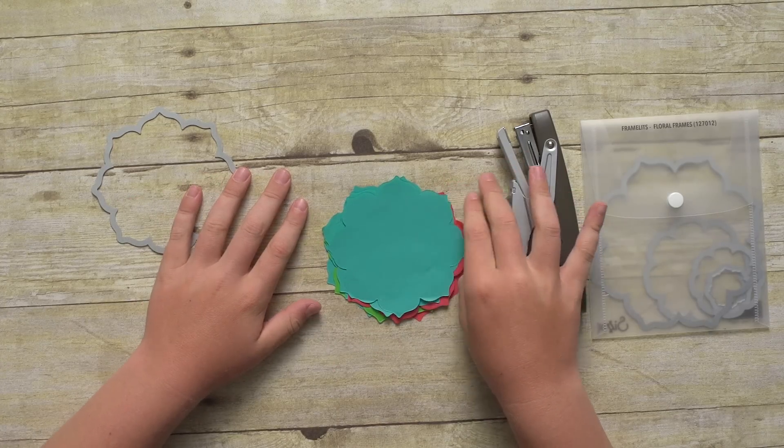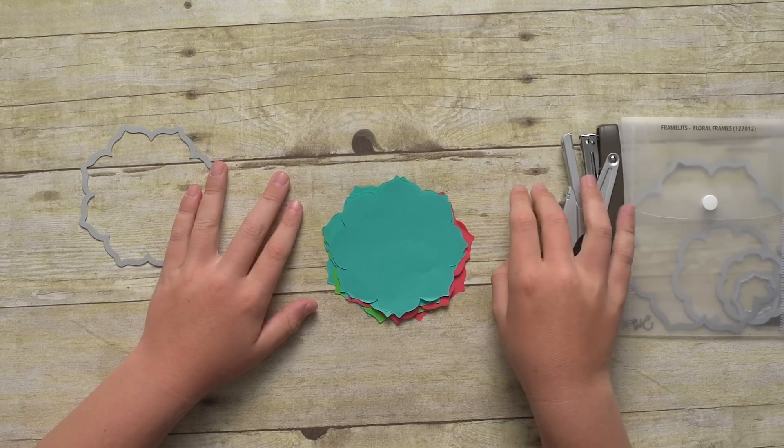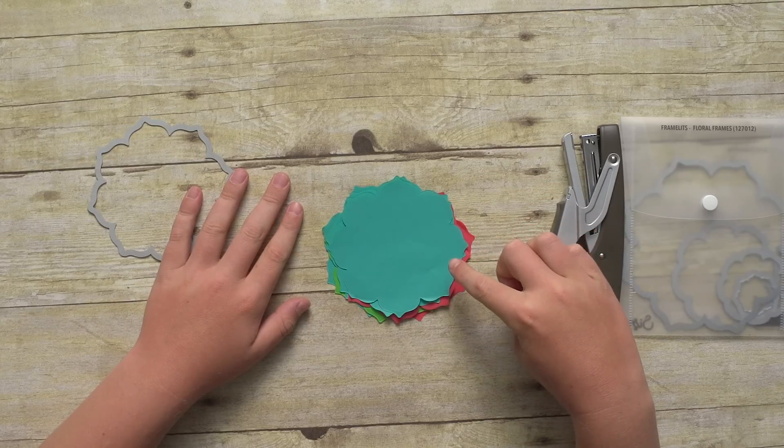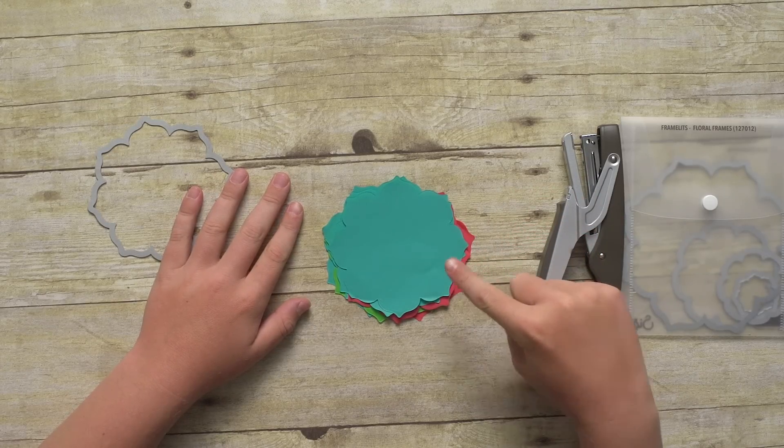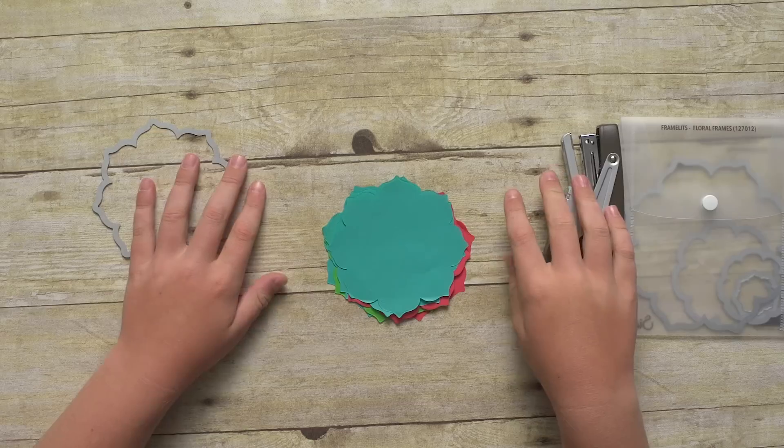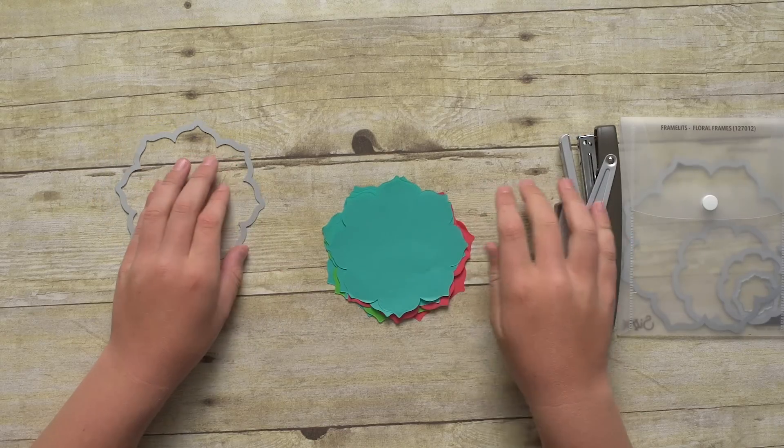It's so simple. What we're going to do is use our cotton paper. When you get the cotton paper from Stampin' Up! it comes in a whole stack of colors. We're just going to use a couple of those colors for this.